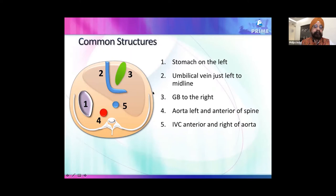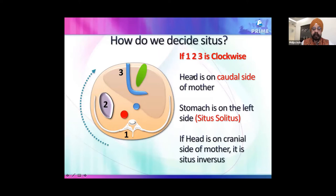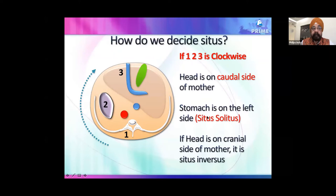Here's a quick — less than one minute — trick to assess situs. Look at the spine, aorta, and stomach. If they are arranged clockwise and then moving the probe caudally you see the heart apex — meaning the head is caudal — you are dealing with situs solitus. This is the clockwise rule for normal situs.